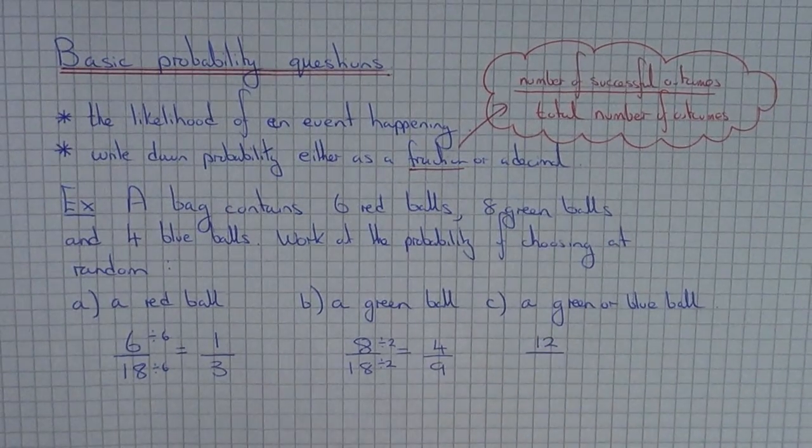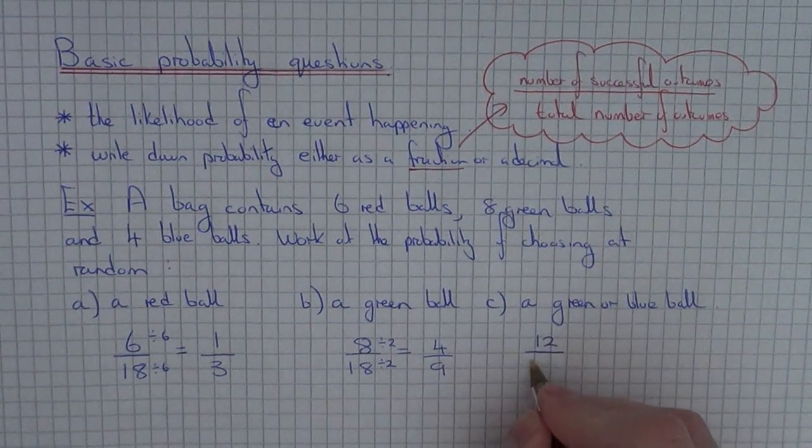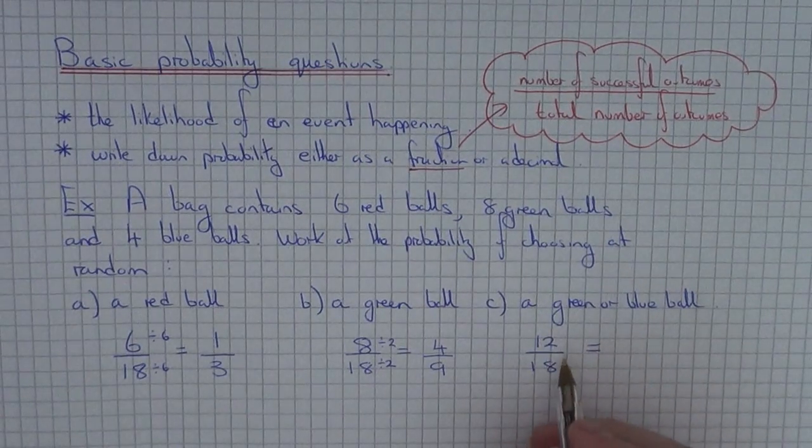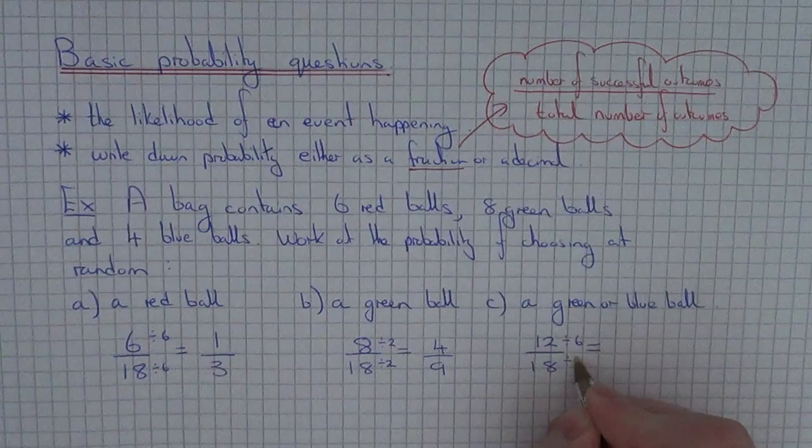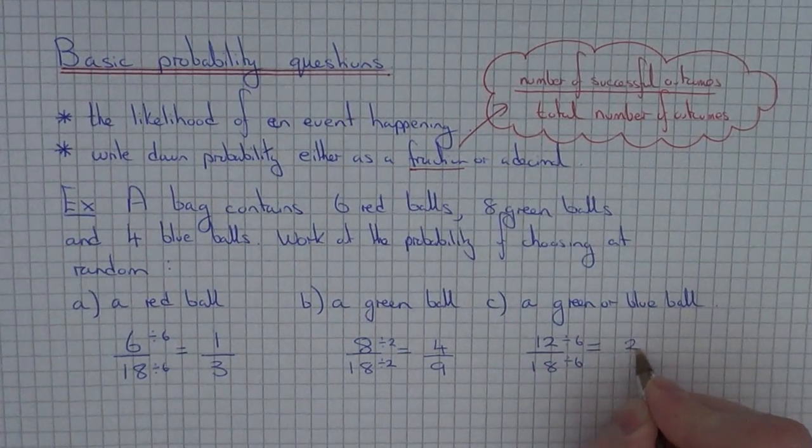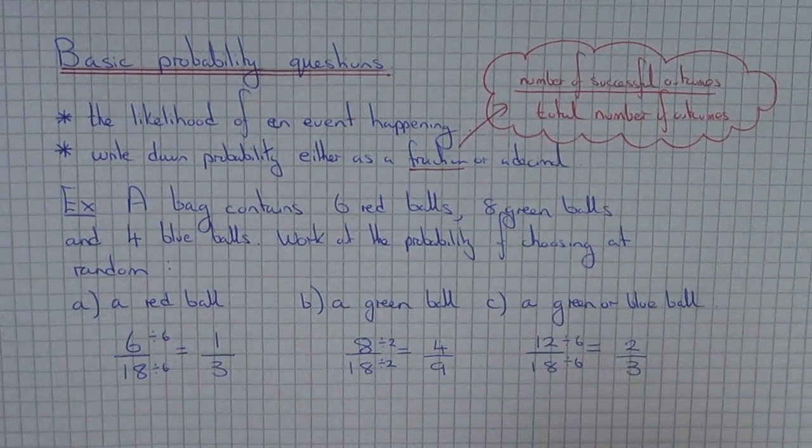Again the total number of outcomes we already know is 18. We can simplify this fraction by dividing by 6 which gives us a probability of 2/3.